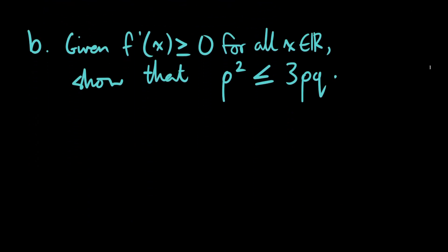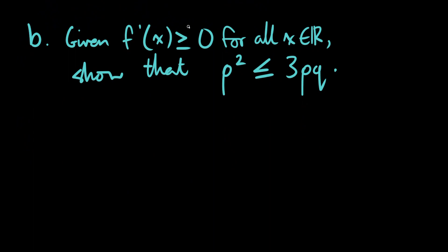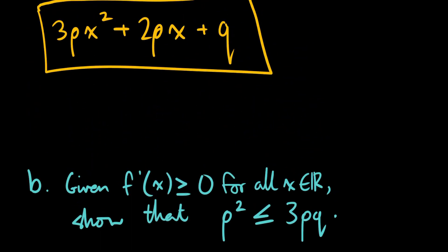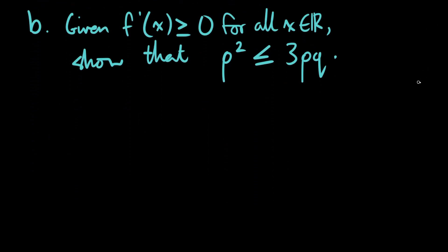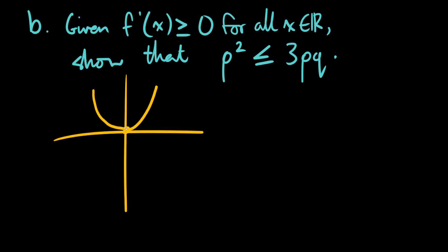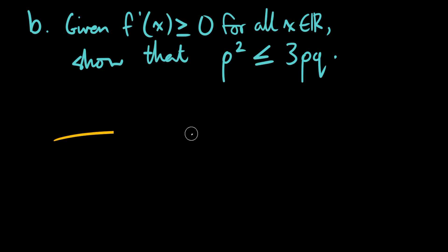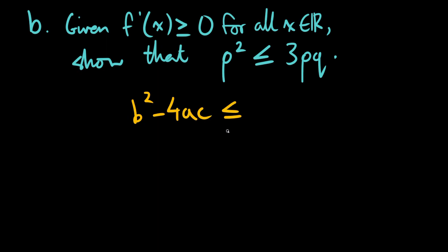We need to carry on this answer to the next part, which asks that, given this derivative function is always greater than or equal to 0 for every x value, we have to show that p squared is always less than or equal to 3pq. You may recognize that this is a quadratic — x squared, x, and constant term. Knowing a quadratic, since it must be greater than or equal to 0 for all x, that means it either has one solution touching once, or no solutions at all. This happens only when the discriminant is equal to 0 or negative, meaning b squared minus 4ac should be less than or equal to 0.